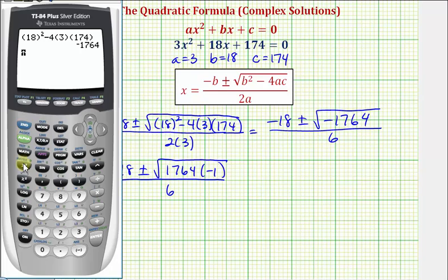So we'll enter second x squared for the square root, and then we have 1764, enter. Notice how this does simplify perfectly. So we should be able to recognize this will simplify to not just 42, but 42i because we have the square root of negative one here.